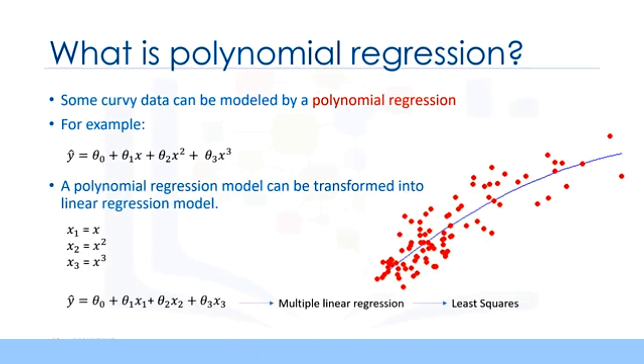Therefore, polynomial regression models can fit using the model of least squares. Least squares is a method for estimating the unknown parameters in a linear regression model by minimizing the sum of the squares of the differences between the observed dependent variable in the given data set and those predicted by the linear function.